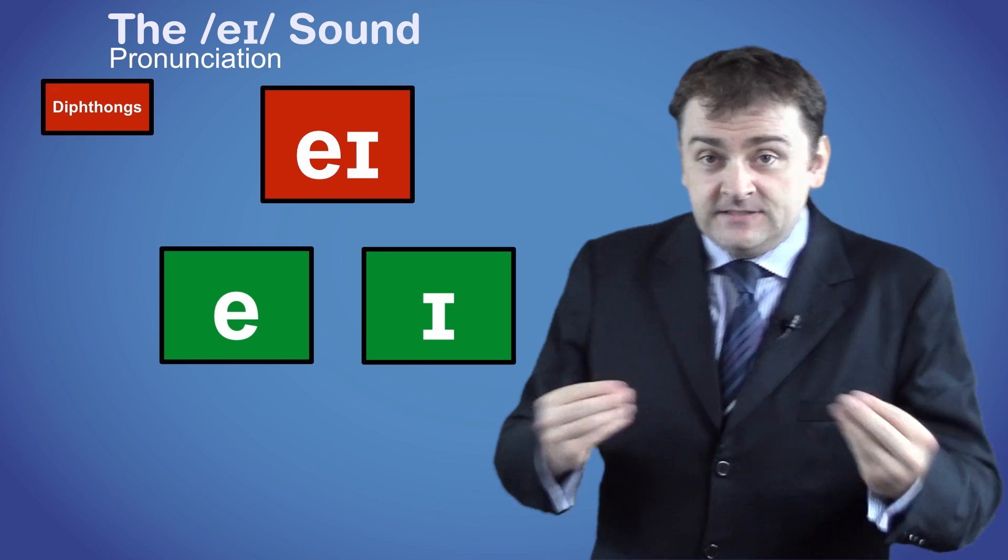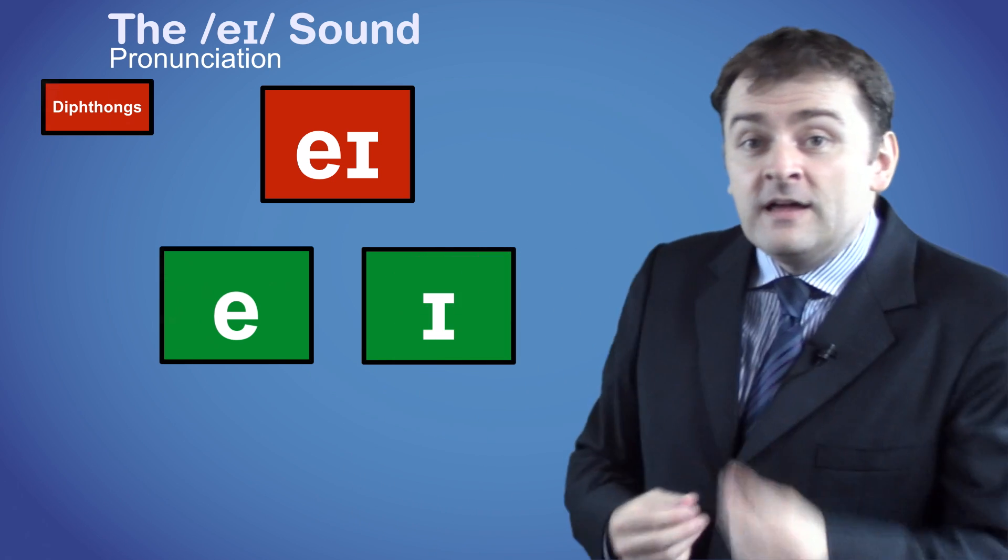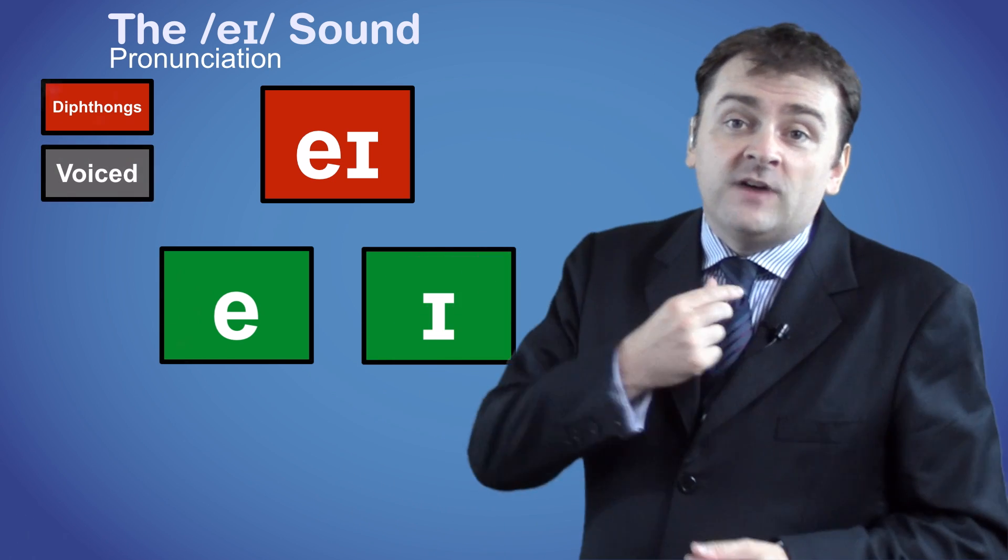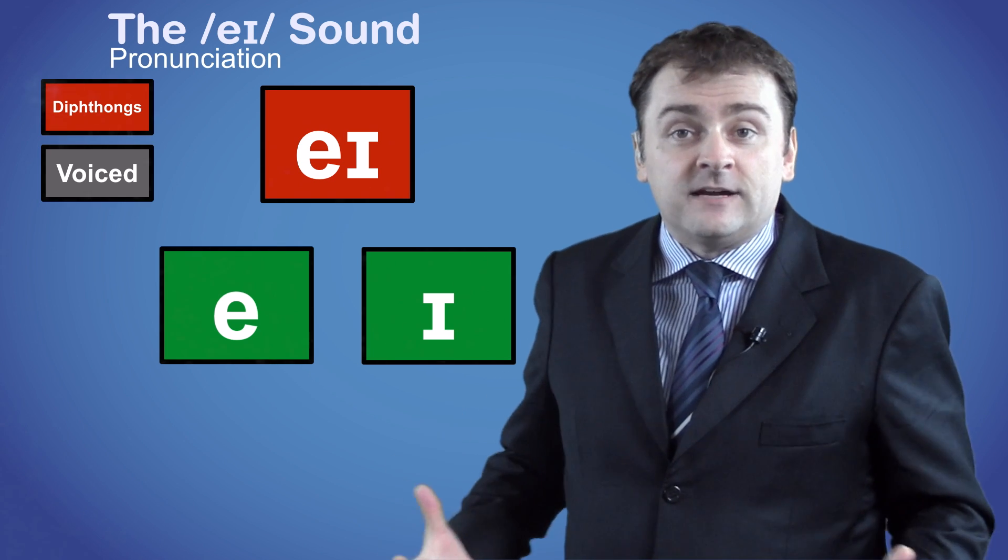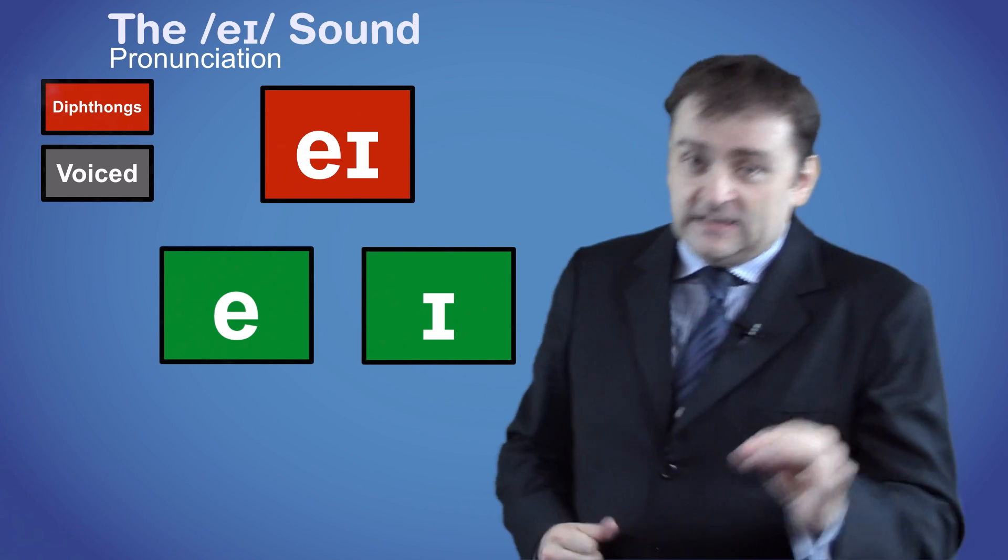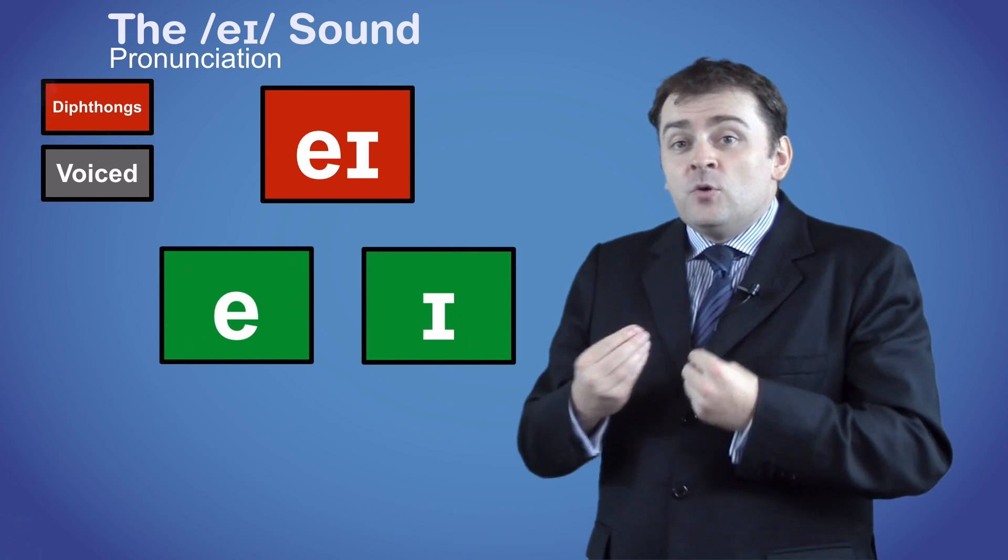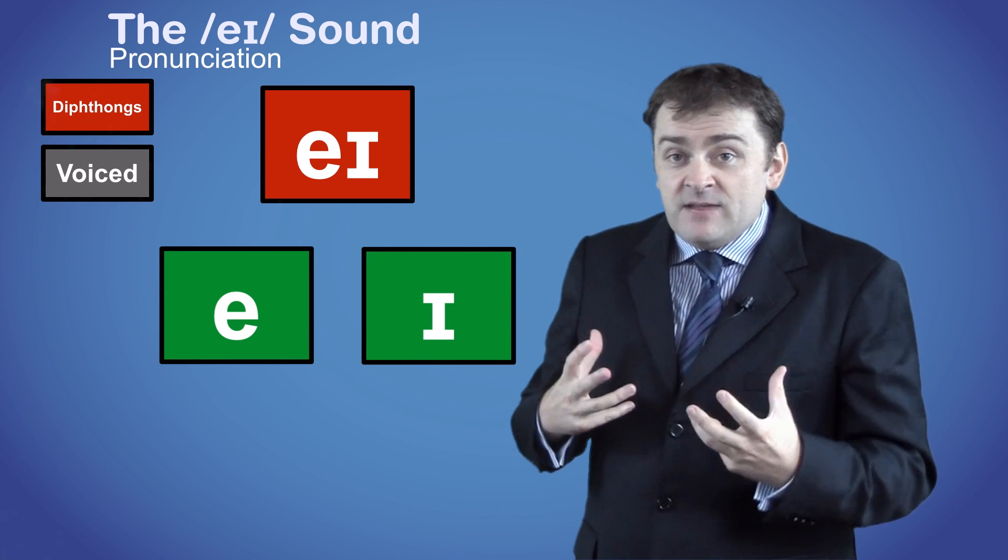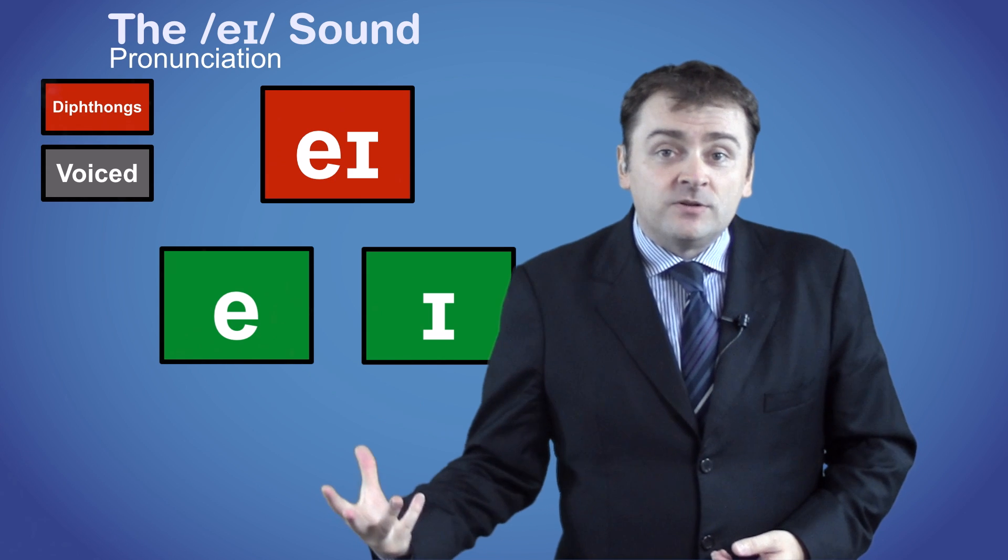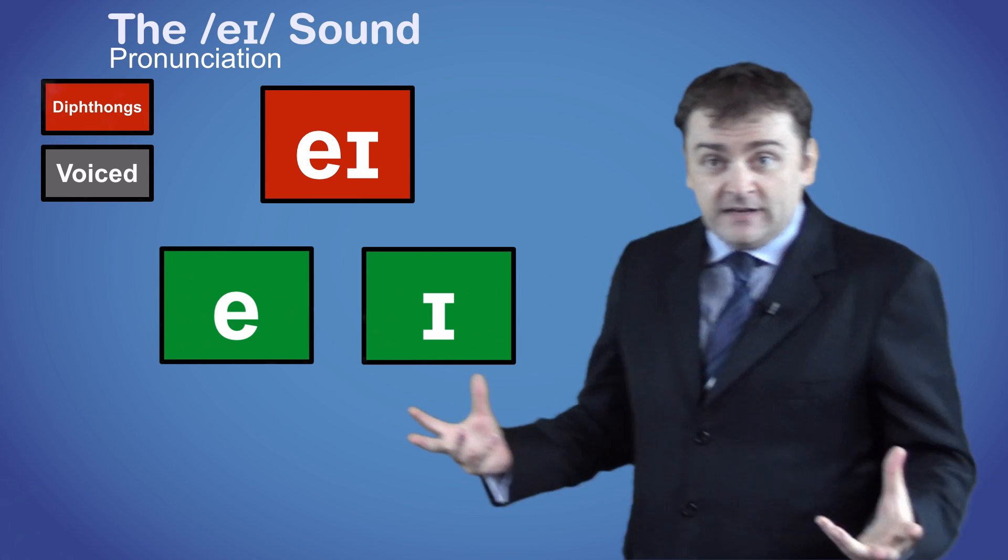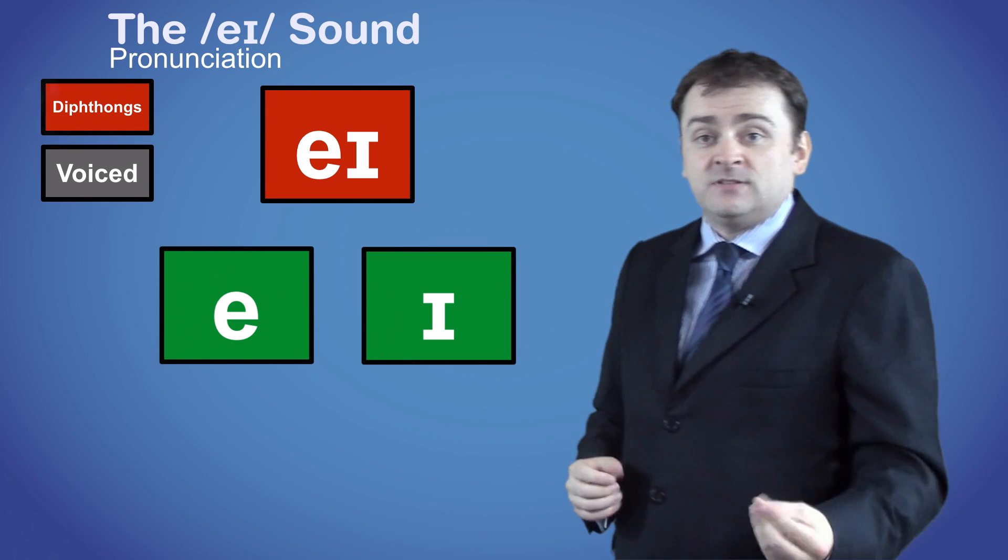Like vowels, the diphthongs are all made through the mouth and they are voiced, which means you vibrate your vocal cords to make the sound. Unlike with vowels and consonants, when you pronounce a diphthong your mouth will change position and shape as you say the sound. This is because they are a combination of two vowel sounds.